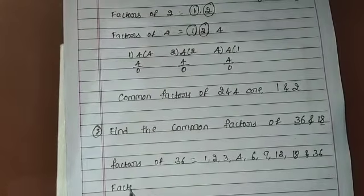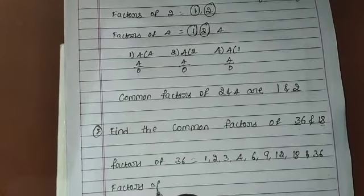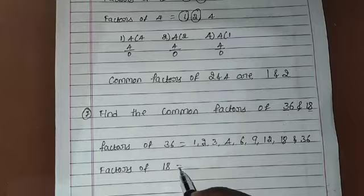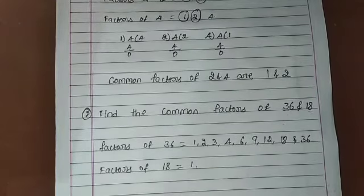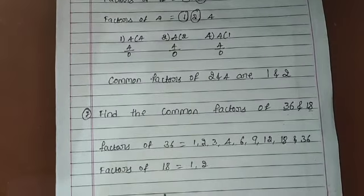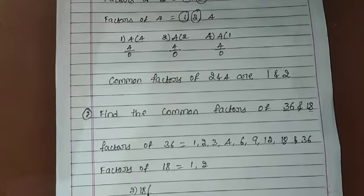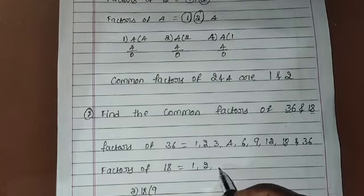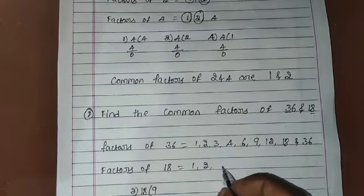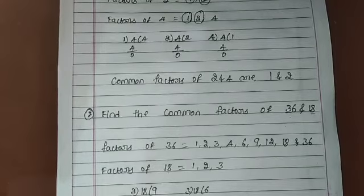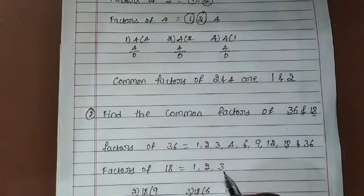Next, we find the factors of 18. One is a factor of every non-zero number, so 1 is a factor of 18. Two divides 18 nine times giving remainder 0, so 2 is a factor of 18. Three divides 18 six times giving remainder 0, so 3 is a factor of 18.